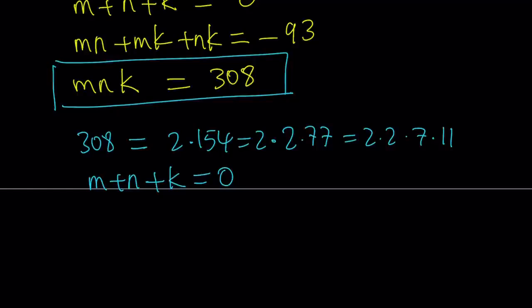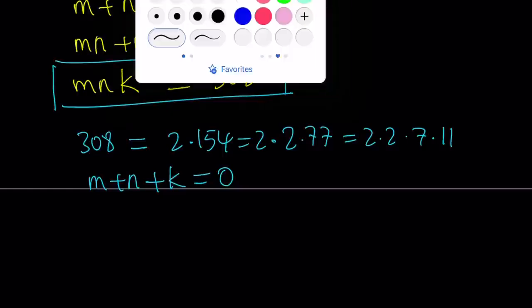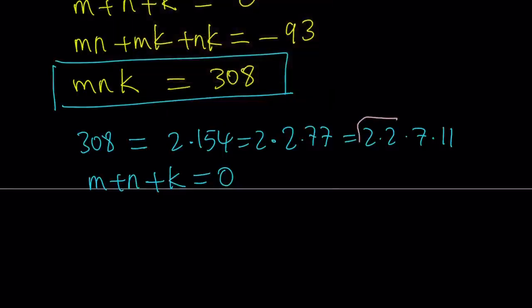So we want to get something, three numbers that add up to 0, and the numbers or the product can be factored into 2 times 2 times 7 times 11. Take a look at the following. If I kind of group the twos together and write this product as 4 times 7 times 11, I immediately realize, maybe not immediately all the time, but if you looked at it before, 4 plus 7 is equal to 11.